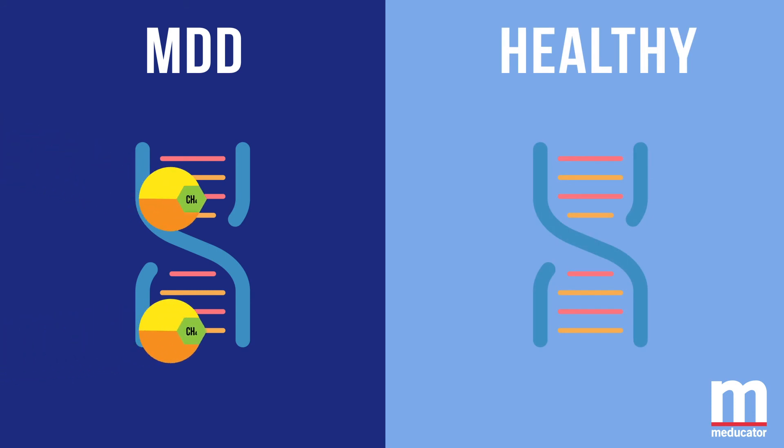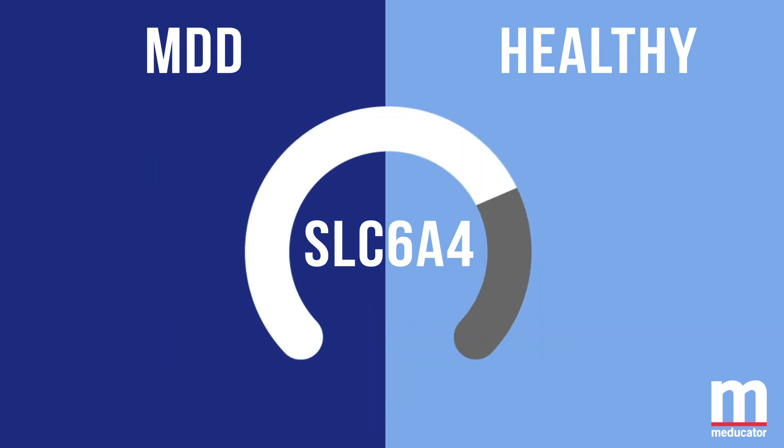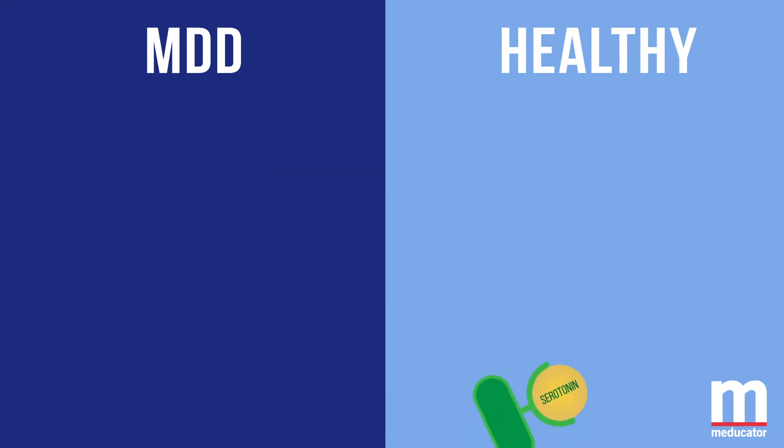and it has been found that patients with MDD have increased levels of DNA methylation around the SLC6A4 gene, which is a gene that encodes for a protein responsible for transporting serotonin. When DNA methylation down-regulates this gene, it could lead to complications in serotonin transportation, which would in turn contribute to the development of MDD.